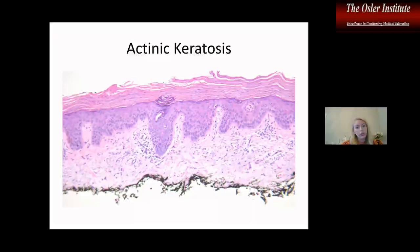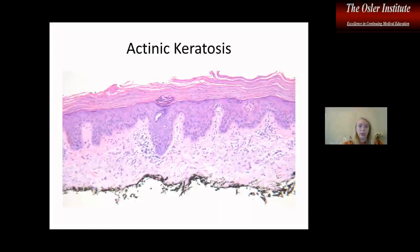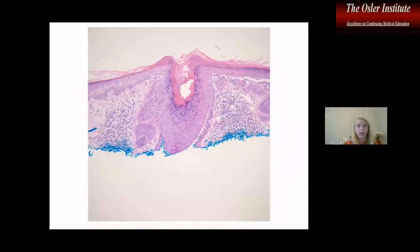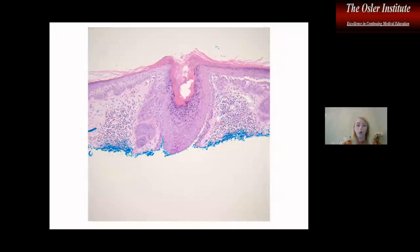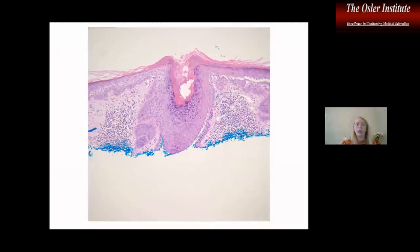Here's the good old actinic keratosis, where you can see that the basal layer of keratinocytes are enlarged and a little jumbled, and there's overlying parakeratosis, but not full-thickness atypia indicating squamous cell carcinoma in situ. Here is an example where actinic keratoses can extend down the follicular units. That doesn't mean it's squamous cell carcinoma, but it does mean it's more resistant to treatment, since freezing often doesn't go deep enough around the follicle to get rid of the lesion. This is just an actinic keratosis with follicular extension.